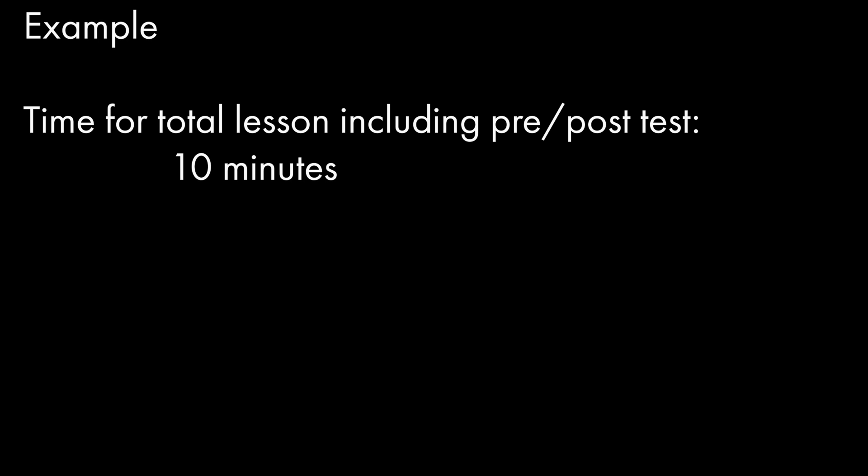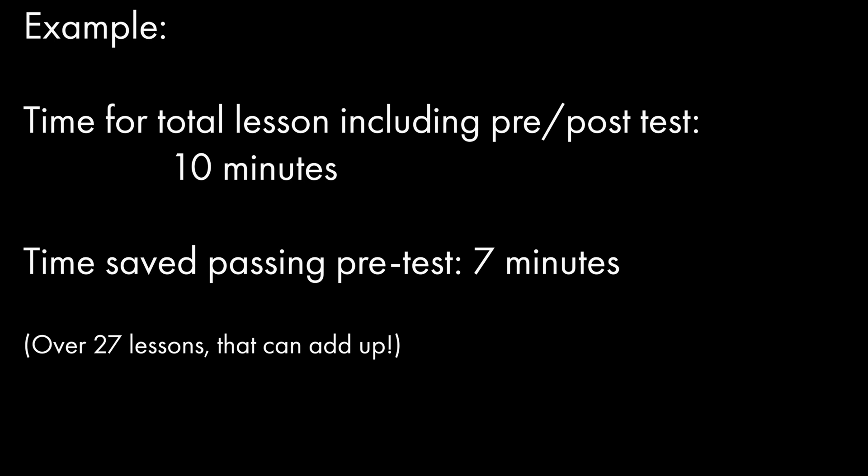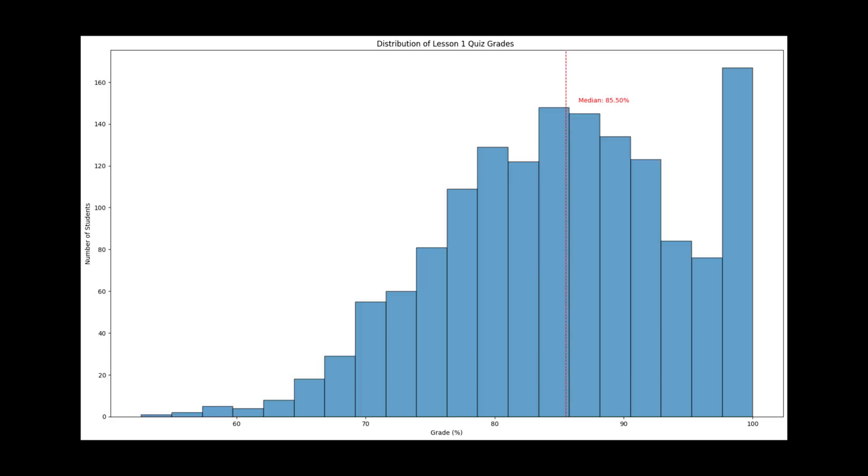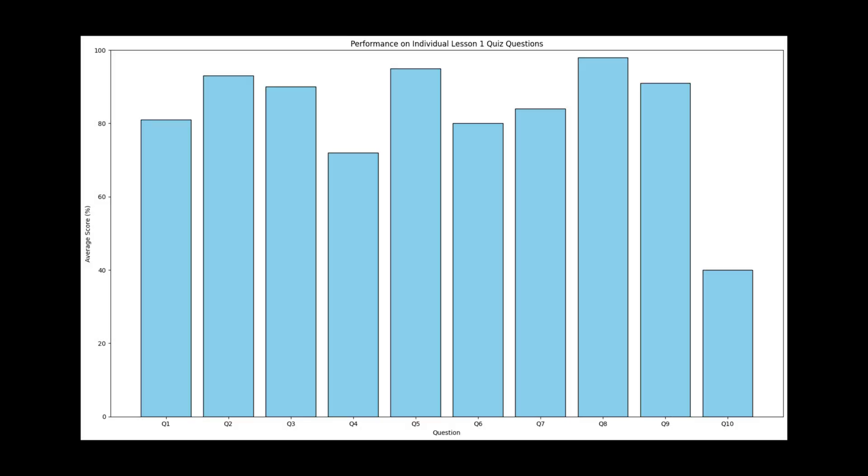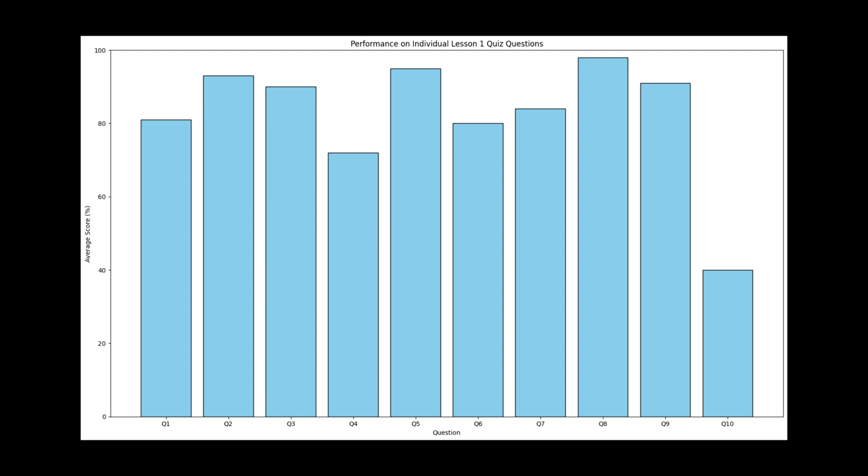Passing the pre-test exempts you from the post-test. Our objective is to not only save you time by allowing you to test out of the lessons, but also to enable the Forecast Decision Training Division to evaluate how well our training meets its objectives. We will examine this data to improve future training. From this introductory video to the final lesson should take you about six hours if you are not able to test out of any of the lessons. We hope a lot of this material is already familiar to you. Additional resources will be available from your training officer. With that being said, let's get you started into the Ensemble Fluency Training Curriculum.